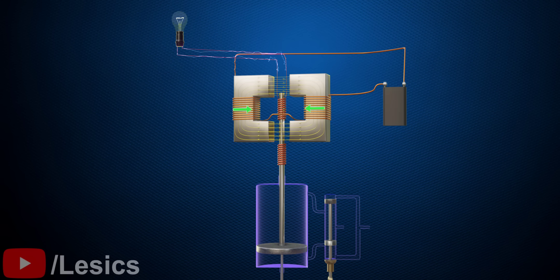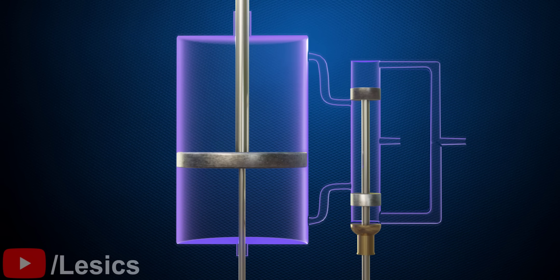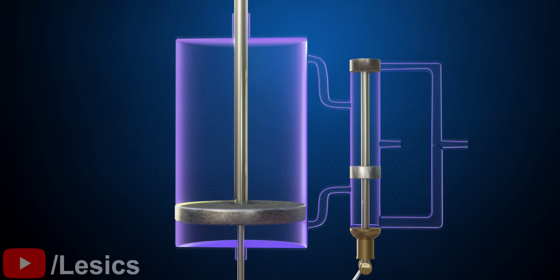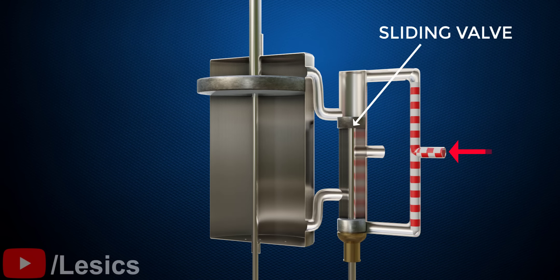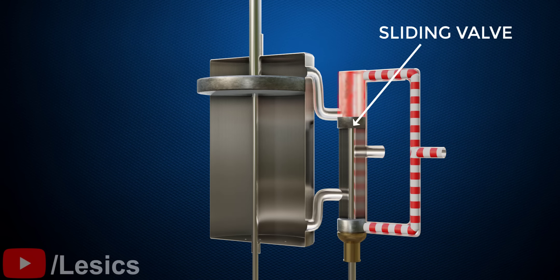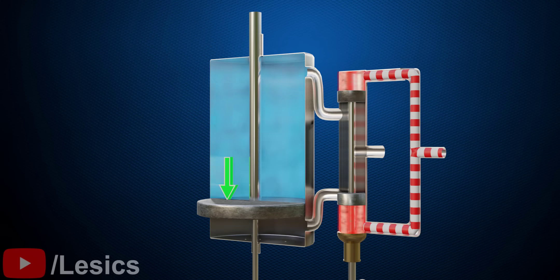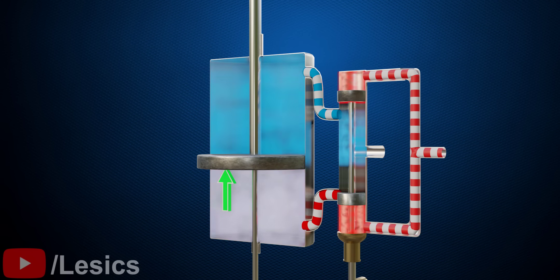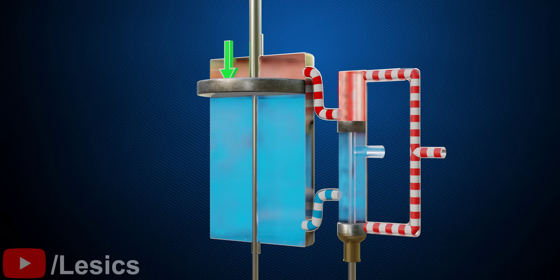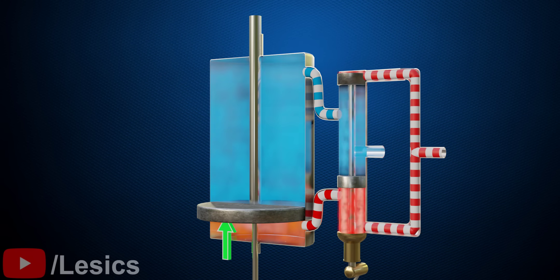Let's understand how a steam engine works. A boiler supplies the high temperature and pressure steam. The sliding valve ensures that sometimes the high-pressure steam exerts force on the top of the piston and at other times it acts from the bottom. This variation ensures that the piston has an oscillating motion, and the flywheel makes the power output of the engine uniform.